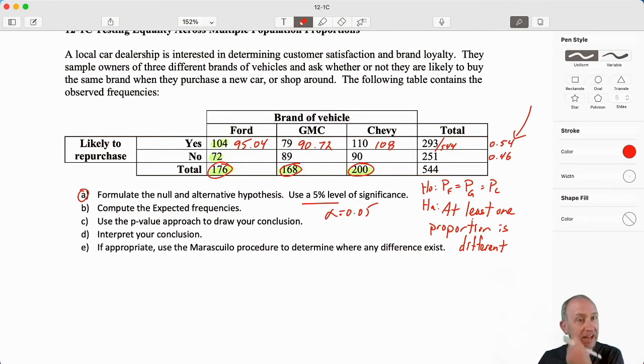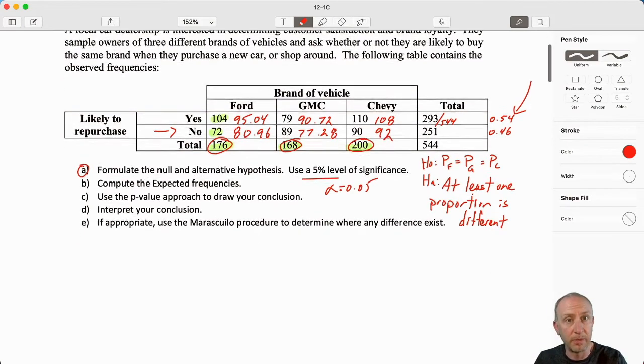So those are my expected values under the assumption that the null is true. That's how many yes responses I would expect from those specific sample sizes. Then applying the same across the no, where that expected proportion would be 46% of 176, that would be 80.96. Applying that to the 168 would be 77.28. And applying that to the 200 would give me 92.